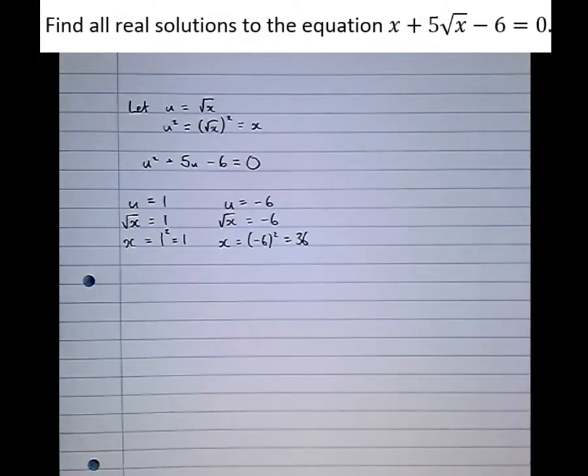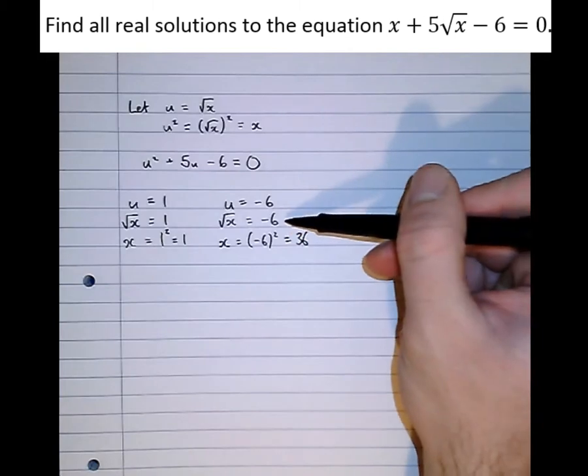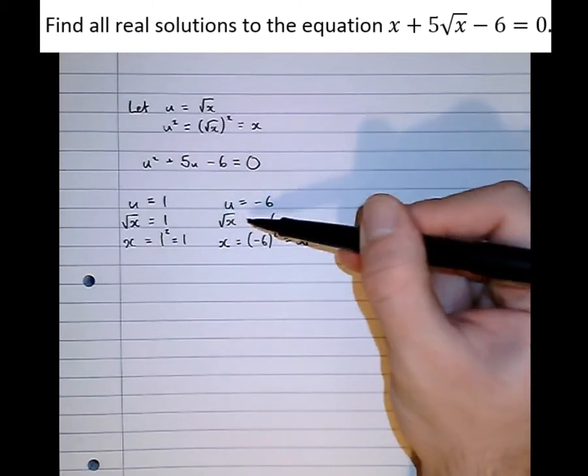Well actually, using this method has produced a false solution. And the only way to check for false solutions is either by subbing them in or looking for alarms, alarm bells. So here, alarm bells should have been ringing when we've got root x equals minus 6.